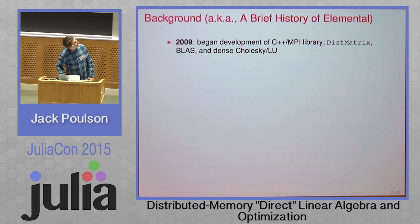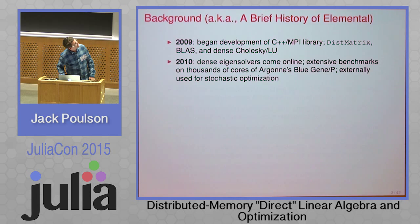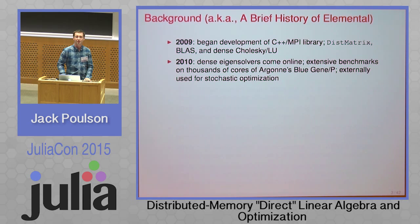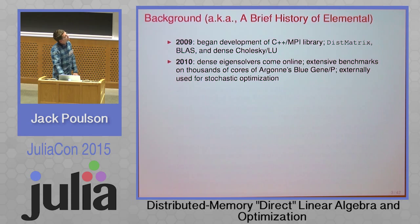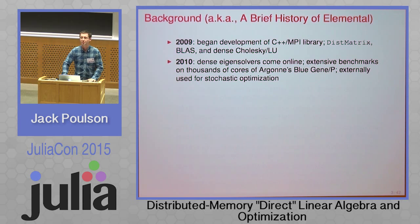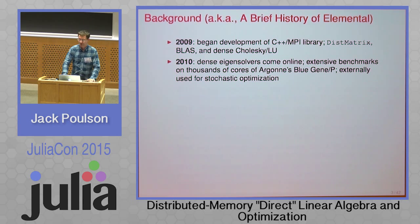In about 2009, that was where the project was. About 2010, I spent a summer at Argonne National Lab and added eigensolver functionality, spending a huge amount of time benchmarking on around 8,000 cores of Blue Gene/P, and ended up pushing out a TOMS publication with a lot of that data. Interestingly, one of the first users of the library was Julia's own Miles Lubin, who saw that there was a nice distributed dense LDL factorization and used it for a really impressive stochastic optimization problem.